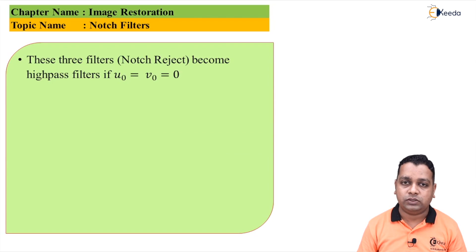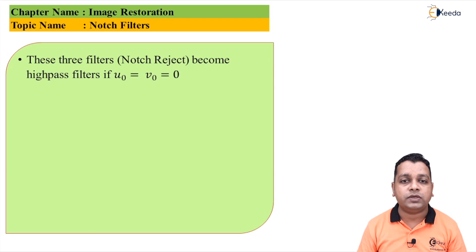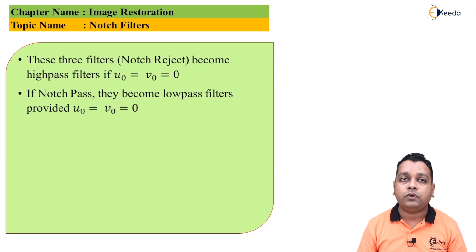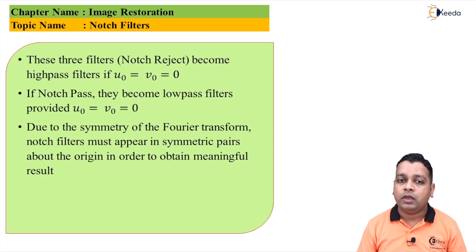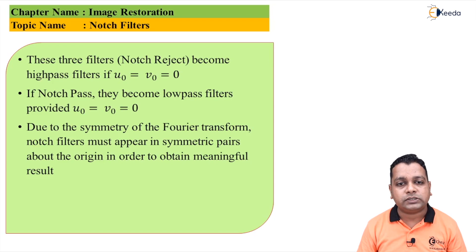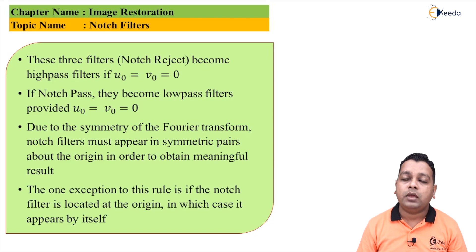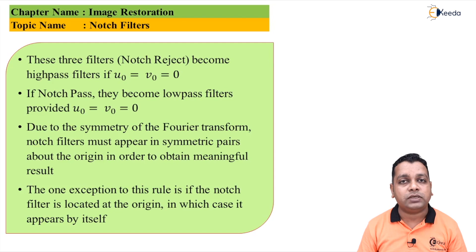These notch reject filters become high pass filters if U0 and V0 are set to 0. Similarly, notch pass filters become low pass filters when U0 and V0 both equal 0. Due to the symmetry of the Fourier transform in the frequency domain, notch filters appear in symmetric pairs about the origin. The one exception is when the notch filter is located at the origin, in which case it appears by itself.